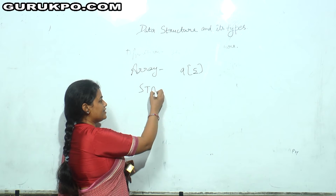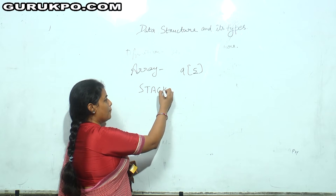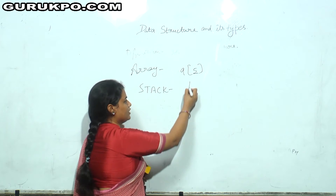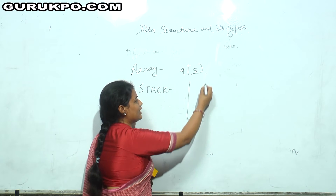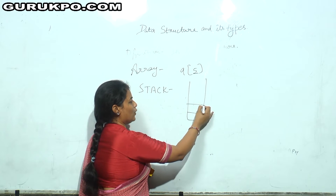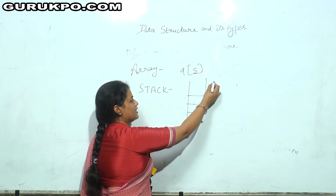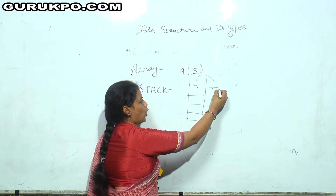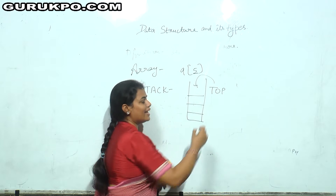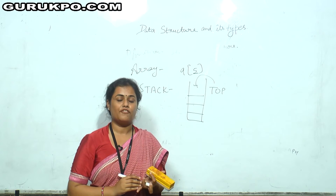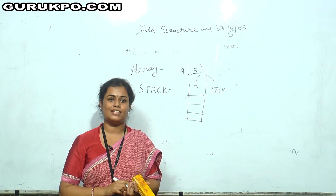The second data structure is stack. In stack, data can be deleted or inserted at only one end, which is called the top. We can insert or delete data from the top of the stack.